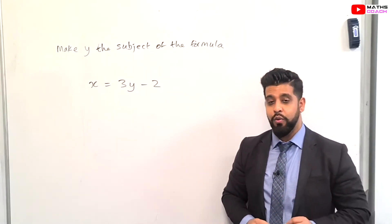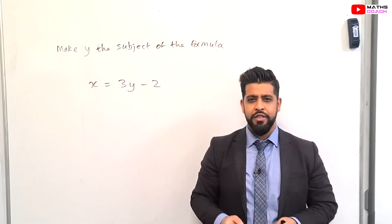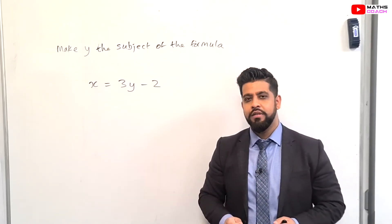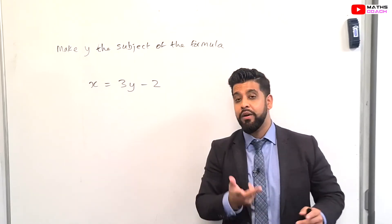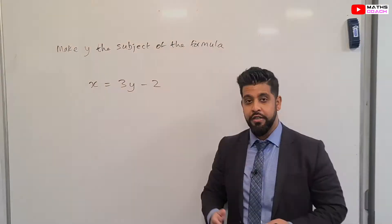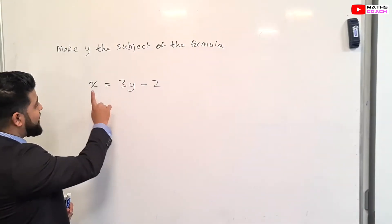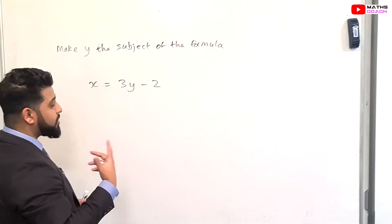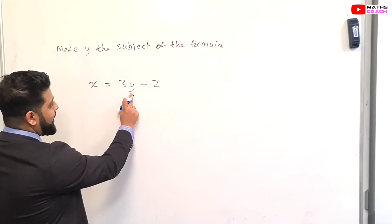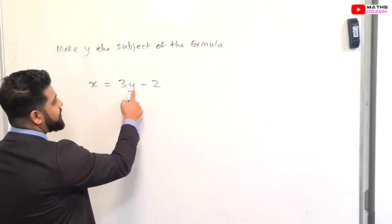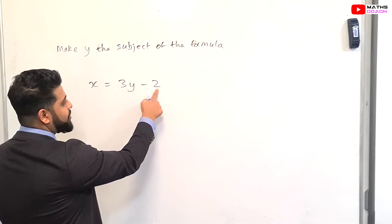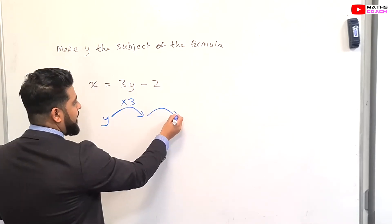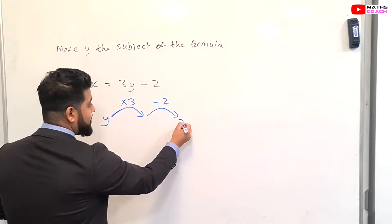I'm going to show you two different ways. The first method uses function machines — I call it the flow chart method. It's simply looking at what happens in each step and going backwards to find the reverse procedure. So for x = 3y − 2, we start with y: the first thing happening to y is being multiplied by 3, then minus 2, and that gives us x.